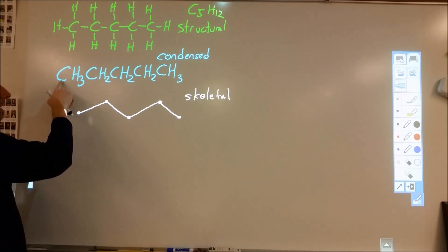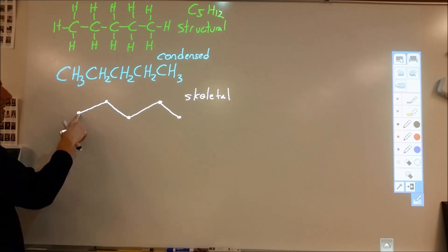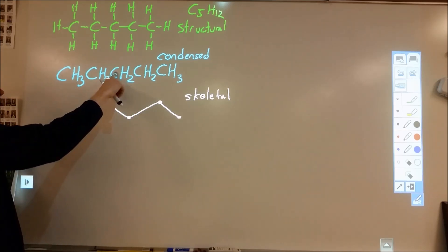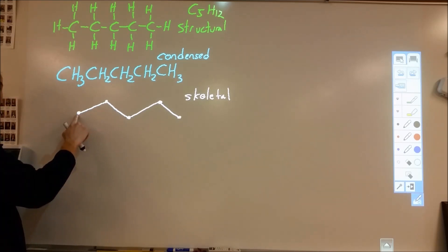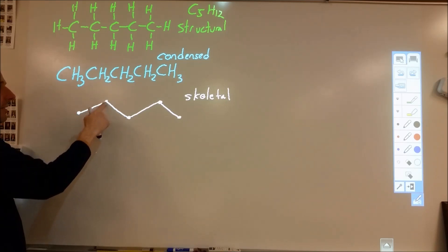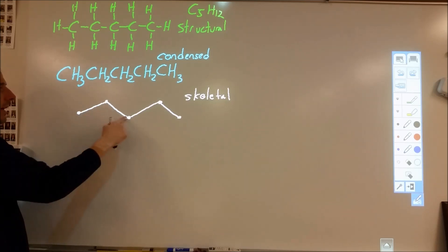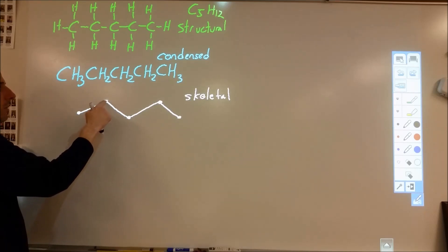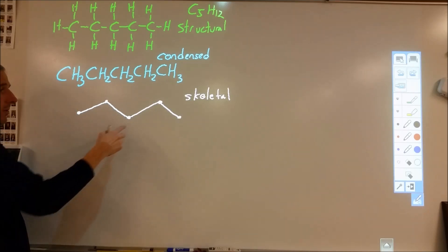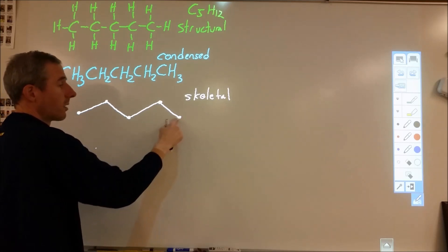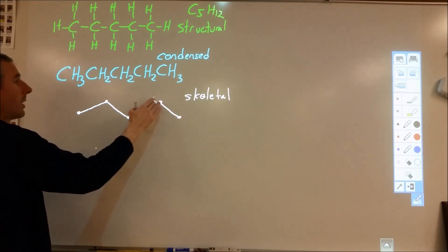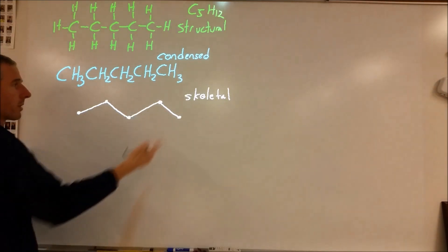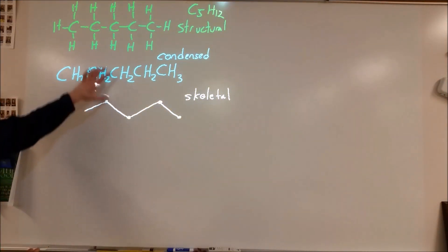This carbon corresponds to this carbon here, and it has three hydrogens attached. To convert back to a structural formula, we recognize that carbon is attached to one other carbon and must form four bonds, so it has three hydrogens. This carbon has two carbons attached, so it only has two hydrogens. Terminal carbons have three hydrogens, and carbons between two other carbons have two hydrogens.